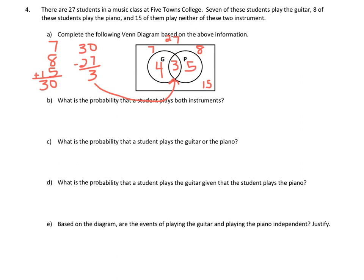Part B asks for the probability that a student plays both instruments. 'Both' refers to the AND — guitar and piano — which is the 3 in the intersection. As a probability, that's 3 out of 27. You don't have to simplify in probability, but if you want to, that simplifies to 1/9.